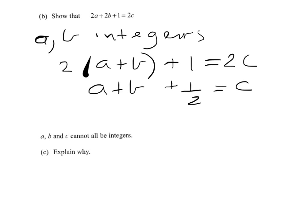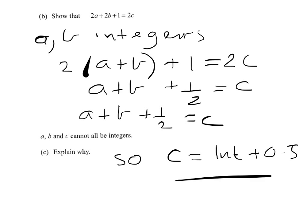So if a and b are integers, then a + b would be an integer, and c would be an integer + 1/2. So really, this explains it. a + b + 1/2 equals c. So c will be an integer + 0.5. So it can't be an integer. An integer must be a whole number. So we can leave it at that.